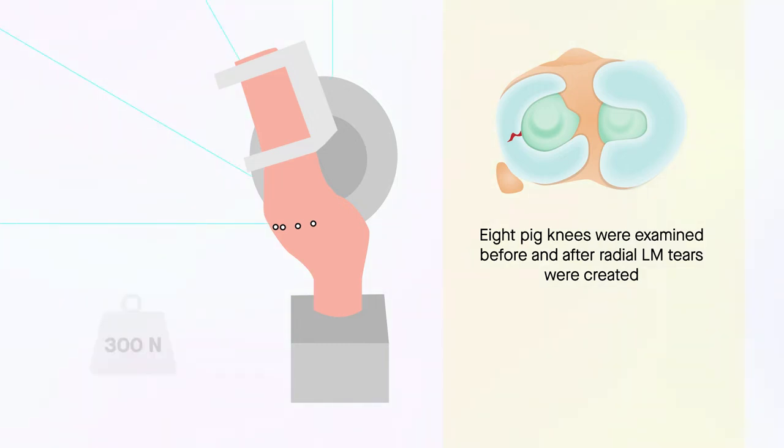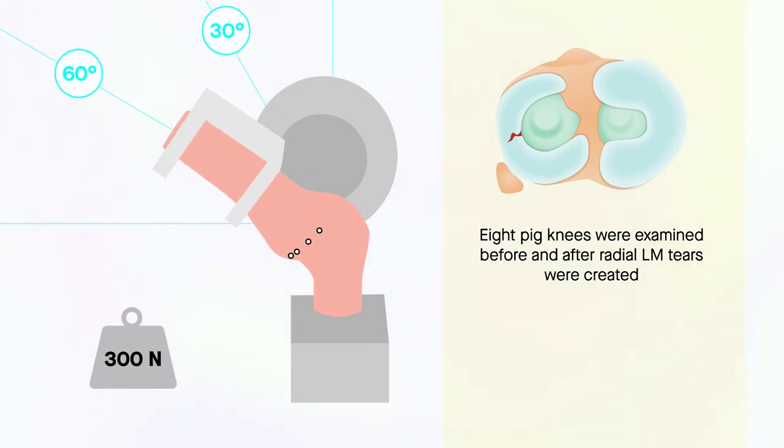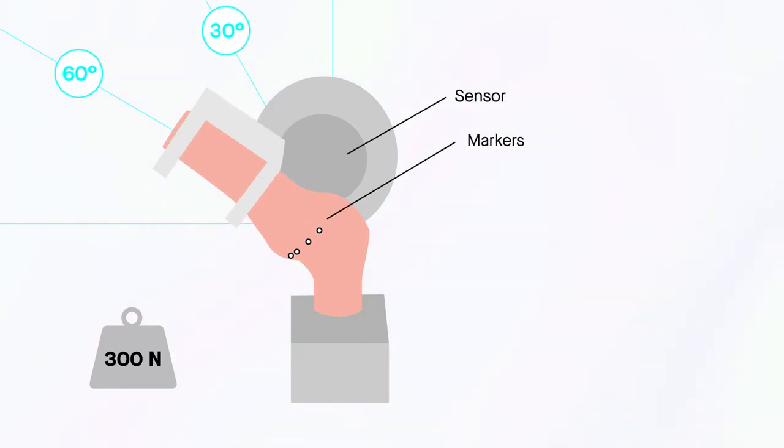The system applied a 300 N axial load to each knee at 30 degrees and 60 degrees of flexion. A sensor attached to the tibia measured the three-dimensional forces on the knee, while cameras tracked LM displacement according to the relative positions of reflective markers.